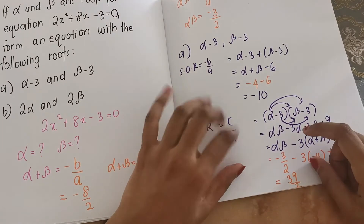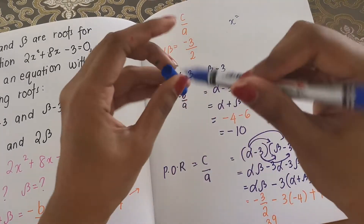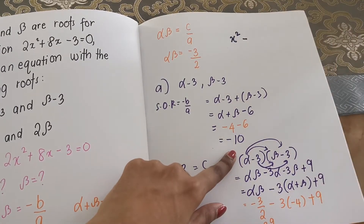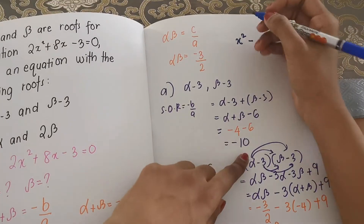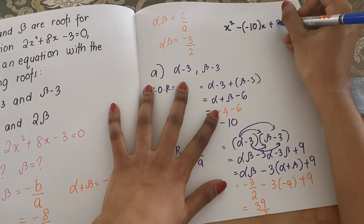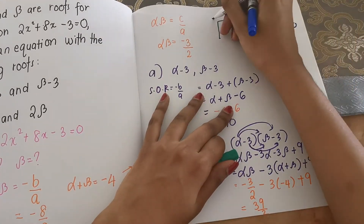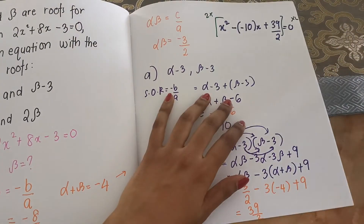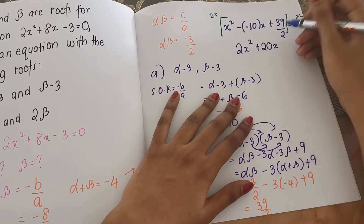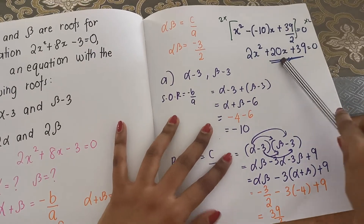Now we can form our equation. We have sum of roots negative 10 and product of roots 39/2. So we write: x² minus (negative 10)x plus 39/2 equals 0, which becomes x² + 10x + 39/2 = 0. We multiply the entire equation by 2: 2x² + 20x + 39 equals 0. This is the final answer for part A.